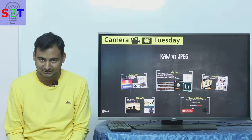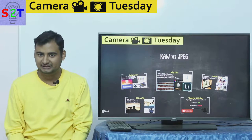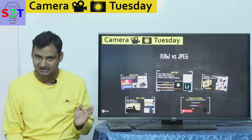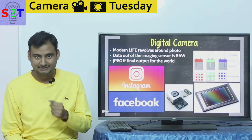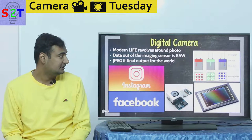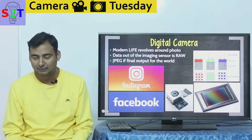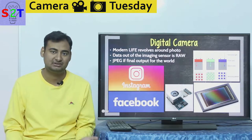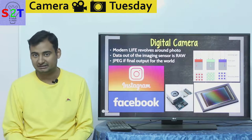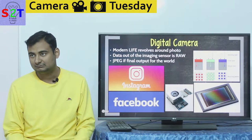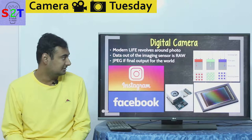Hello YouTube viewers, welcome to my show Camera Tuesday. In today's episode we're going to take a look at the very age-old debate of RAW versus JPEG. Since digital cameras have been gaining steam, they've become an integral part of our modern life — from your mobile camera to point-and-shoot, bridge cameras, mirrorless, and DSLRs. Photos are everywhere, integrated into Facebook and Instagram, so photos matter in today's day and age.